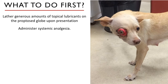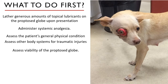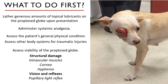Looking at this dog, the eye is really looking bad — of course there is pain. You must thoroughly assess the patient's general physical condition and other signs of possible traumatic injuries, especially if the initial trauma was a dog bite or hit by car, as there are surely other injuries that need your attention. After all of those are done and you want to focus on the eye, you must assess the viability: can it be saved? Is it still functional?